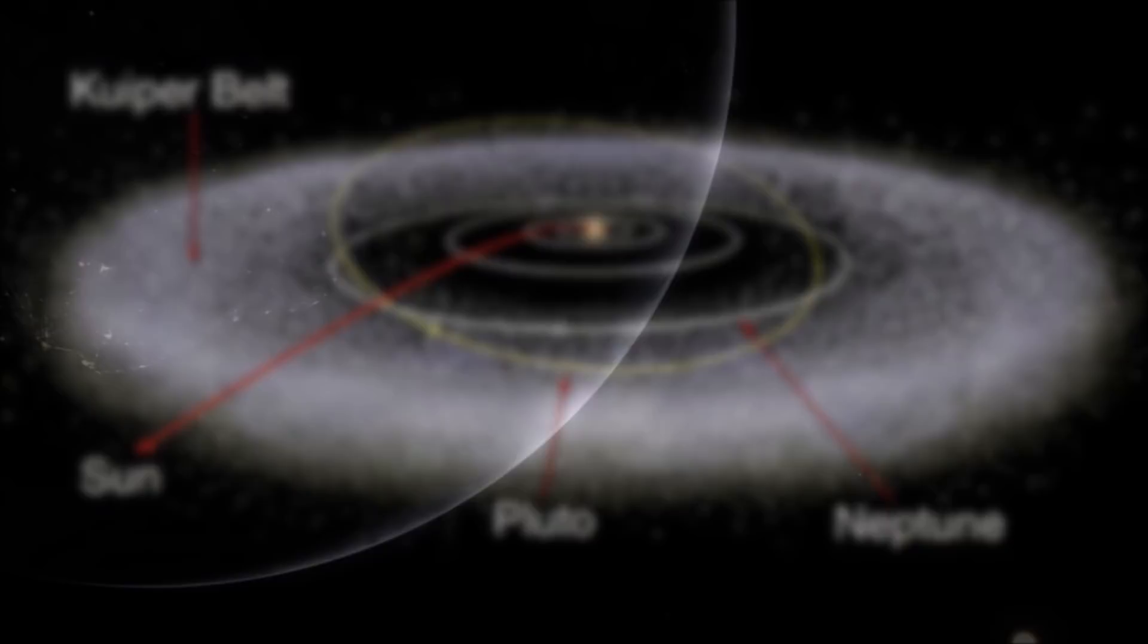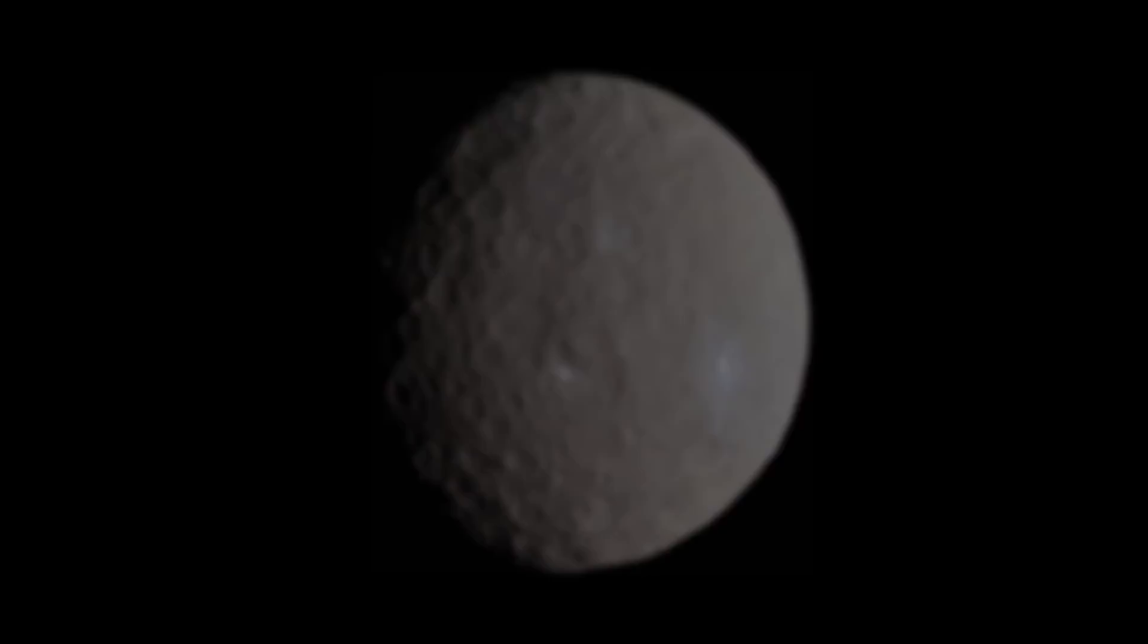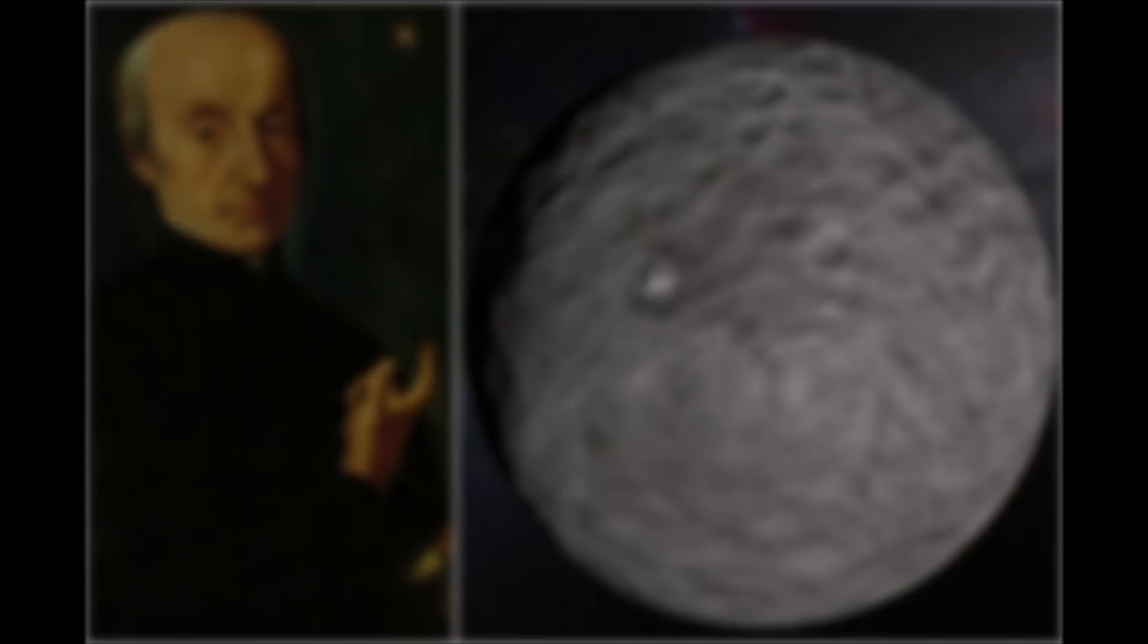Ceres is essentially a large asteroid, and is the largest of the large asteroids within the belt, hence why it toes the line between asteroid and dwarf planet. It was first discovered in 1801 by astronomer Giuseppe Piazzi at the Astronomical Observatory of Palermo. In the years leading up to this, it was theorized that a planet like Ceres would exist between Mars and Jupiter, as part of the now disproven Titus-Bode law.